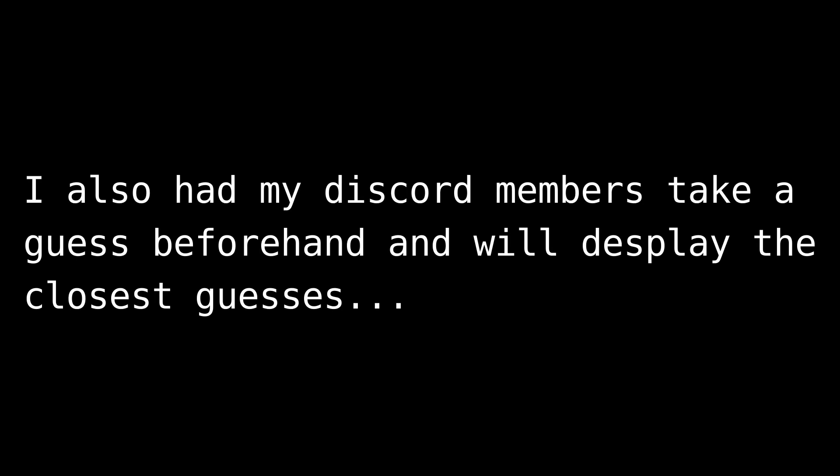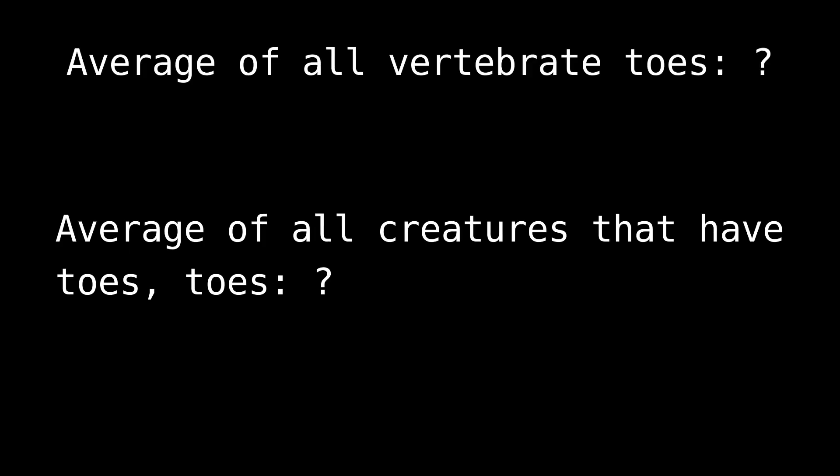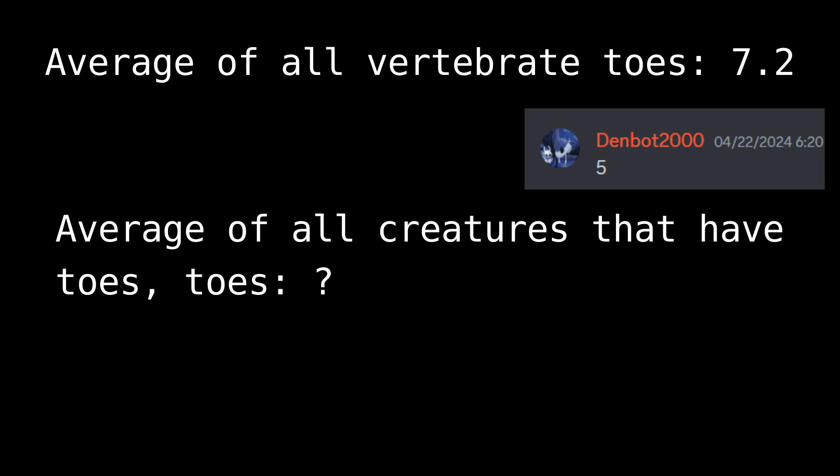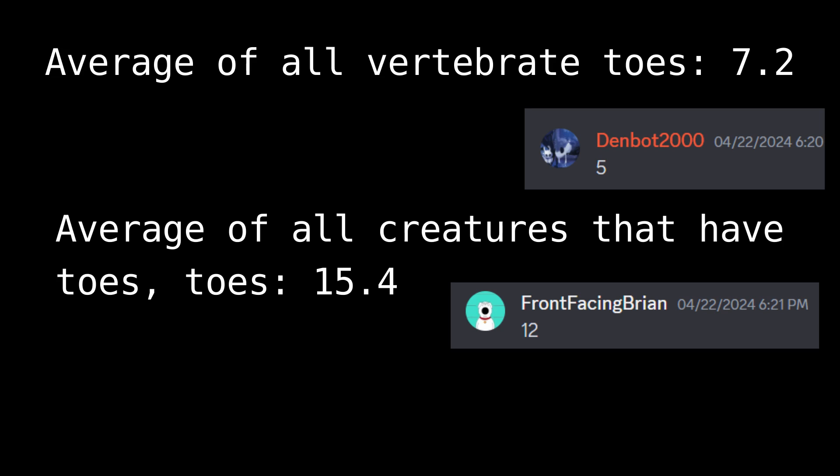We now have all the numbers needed to calculate the average number of toes for all creatures. Doing some quick maths, the total for all vertebrates that could have toes is 7.2 toes. And if we ignore all the animals that don't have toes — such as fish and snakes — we get a total of 15.4. That's almost exactly double, but actually a little more than double, the original number. Now, you might be asking: who cares? And that's a really good question, because this doesn't matter. Thank you.